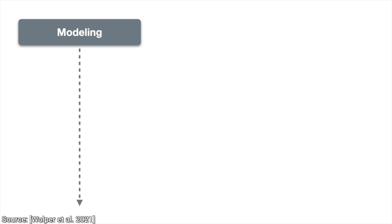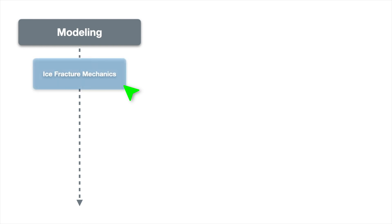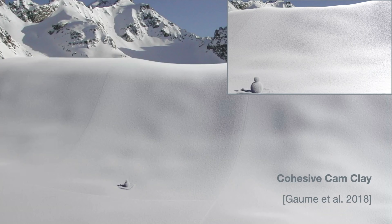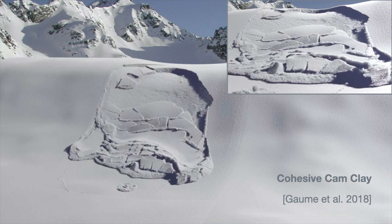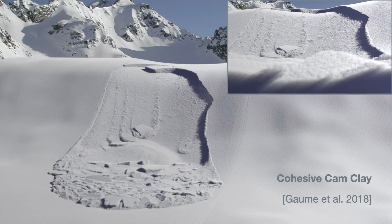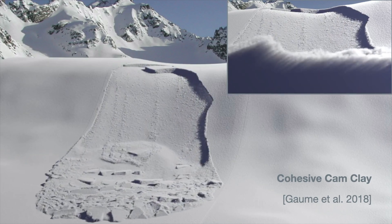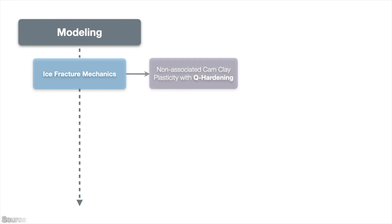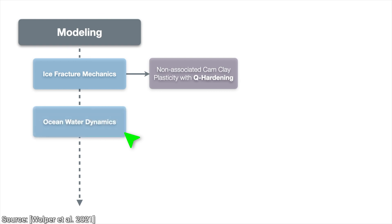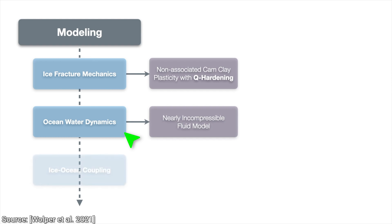To start out, we need three things. First, we need to simulate ice fracturing. Here is a related earlier work — however, this is on snow. Ice is different. That is going to be a challenge. Two, we need to simulate the ocean. And three, simulate how the two react to each other.